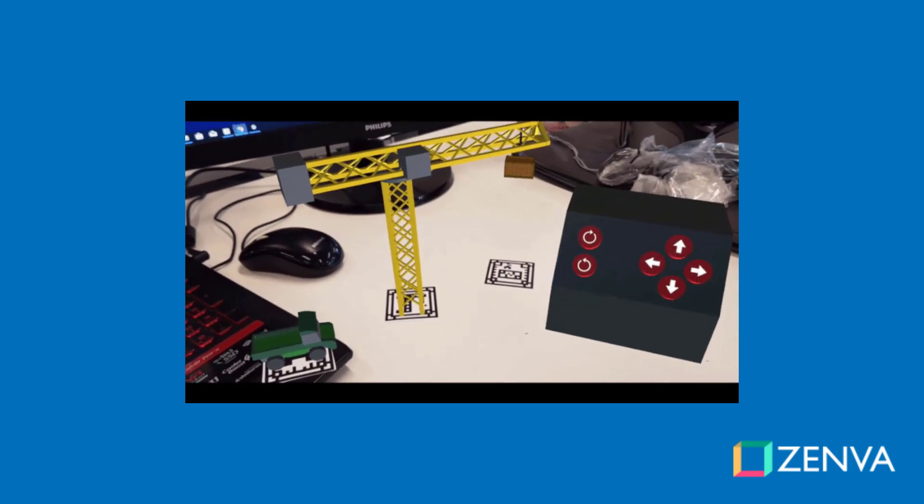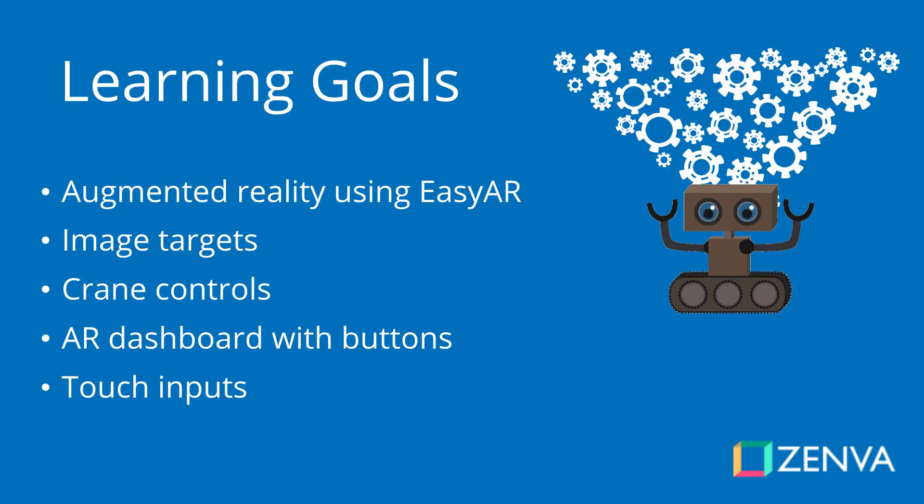First of all we'll be learning how to use the EasyAR SDK. This is an augmented reality SDK which allows you to use image targets. Like I mentioned, these are little QR codes that you can print out and the app is able to identify them, figure out their position, their rotation, their scale and then render models, images, particle effects, whatever you want on top of them.